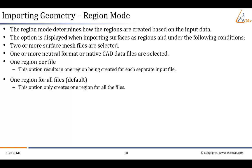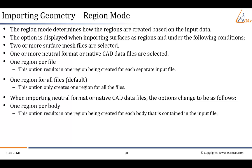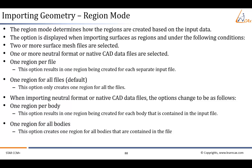When importing neutral format or native CAD data files, two options are available. The first is 'one region per body,' which results in one region being created for each body contained in the input file. The second is 'one region for all bodies,' which creates one region for all bodies contained in the file. In addition, if multiple files are selected, then the 'one region per file' option is also available.